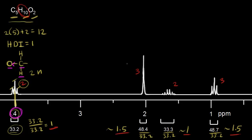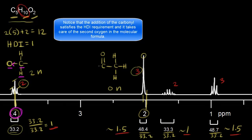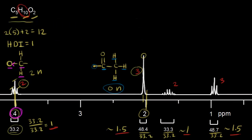Moving to the next signal — three protons, so that's a methyl group. There's only one peak here, so one minus one equals zero neighboring protons. The chemical shift is just past two parts per million, which is the region for a proton next to a carbonyl. Drawing in a carbonyl with a carbon bonded to it, that carbonyl carbon has no protons, which explains why we get zero neighbors for these methyl protons.